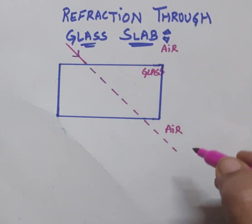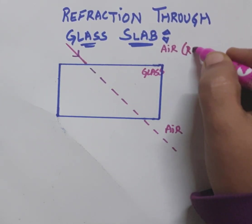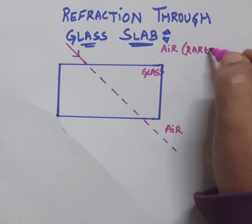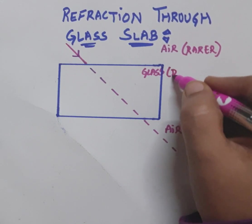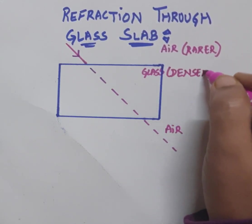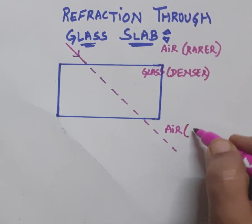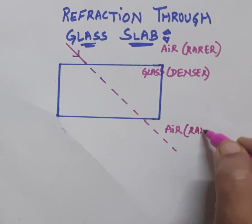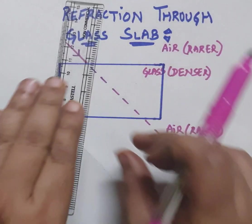Out of air and glass, we know that air is an optically rarer medium and glass is an optically denser medium. Again, when light comes out through the glass slab, it will enter into the air, which is again a rarer medium. So this is the incident ray, and at the point of incidence we will draw the normal.